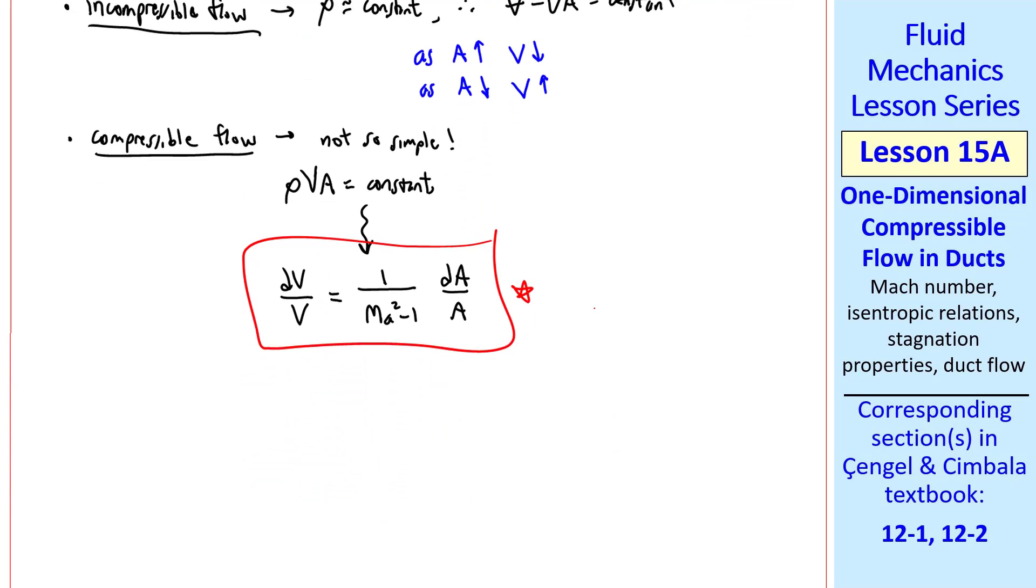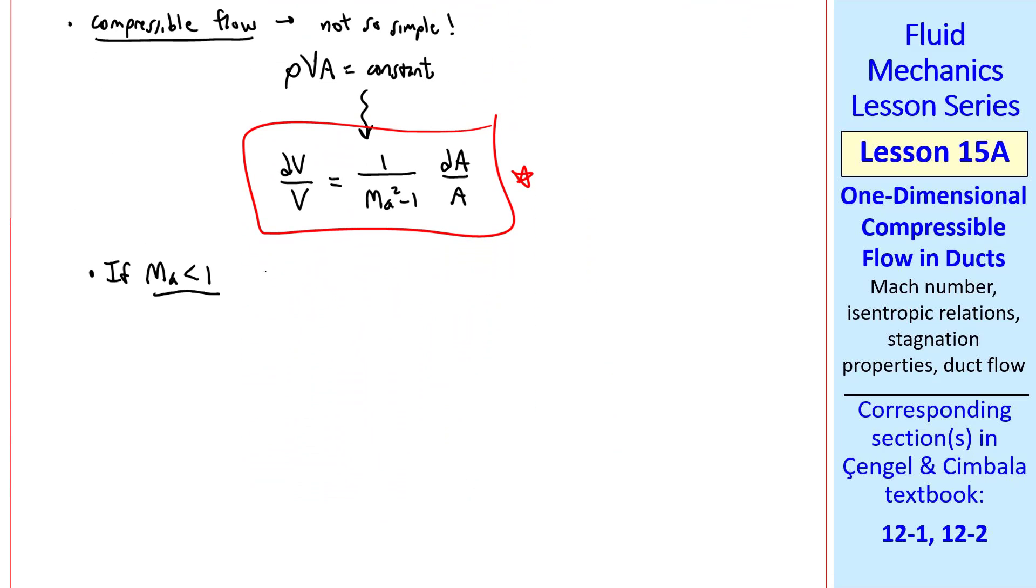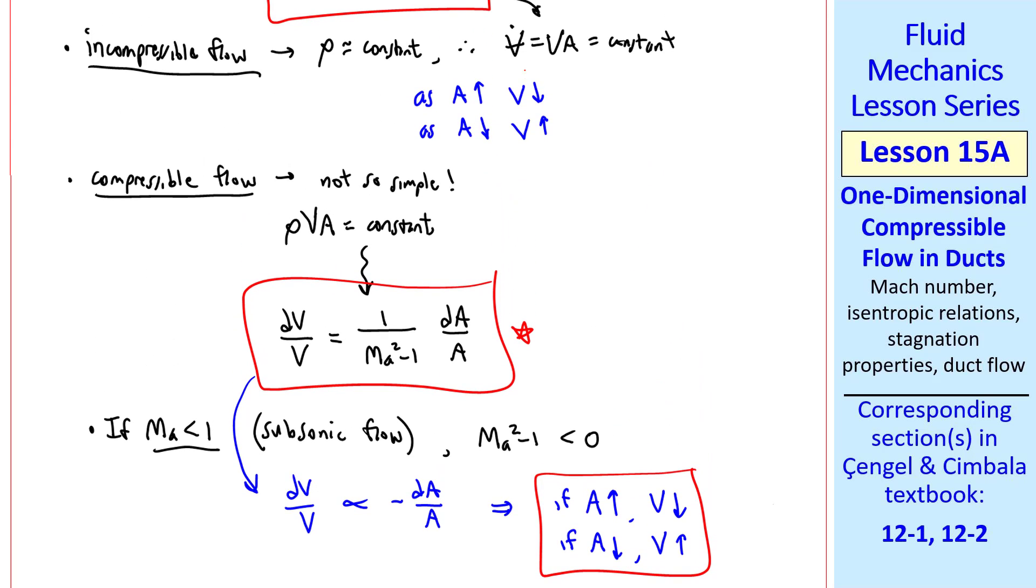We can learn a lot from this equation. If Mach number is less than 1, in other words the flow is subsonic, then Ma squared minus 1 is negative. So dV/V varies like negative dA/A. So if A goes up, V goes down, and if A goes down, V goes up. This agrees with what we're familiar with in incompressible flow.